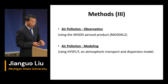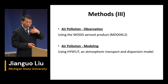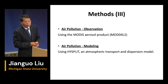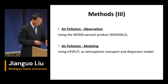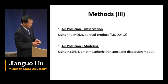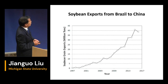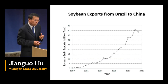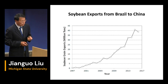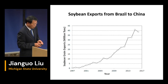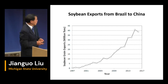Furthermore, we modeled air pollution transport in Heilongjiang province and the neighboring provinces of Russia using a transport and spatial model. Here are some results. As you can see, this is just one example: soybean exports from Brazil to China grew exponentially over 20 years from 1997 to 2017.